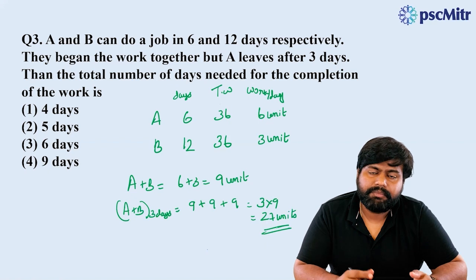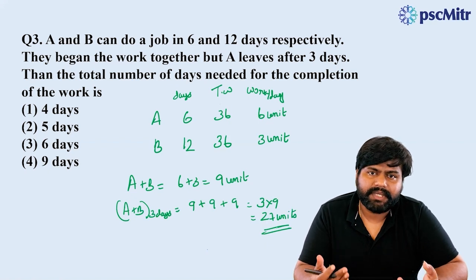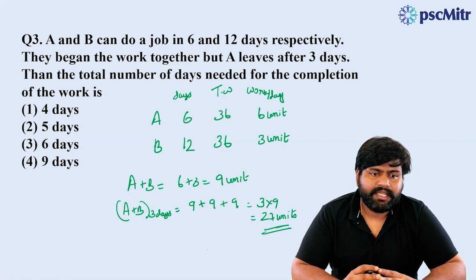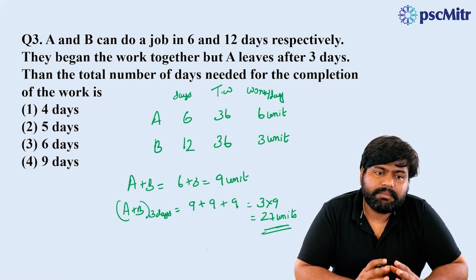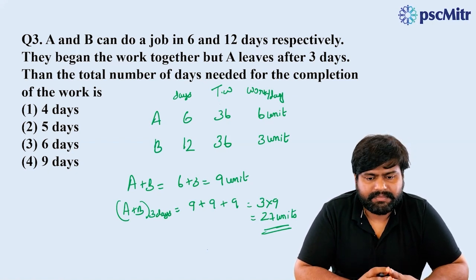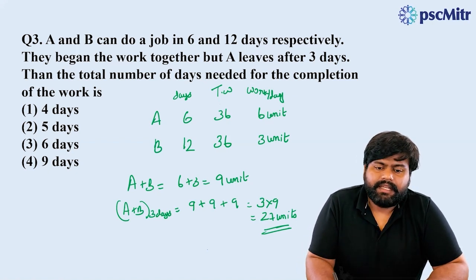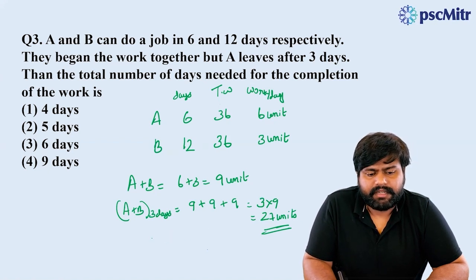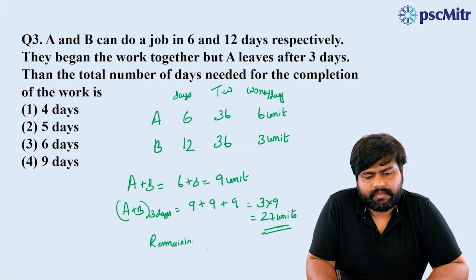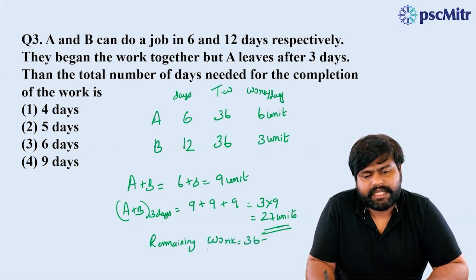Completed by A and B together. This is the total number of days needed for the completion of the work. This is the remaining work: 36 minus 27, that's 9 units.